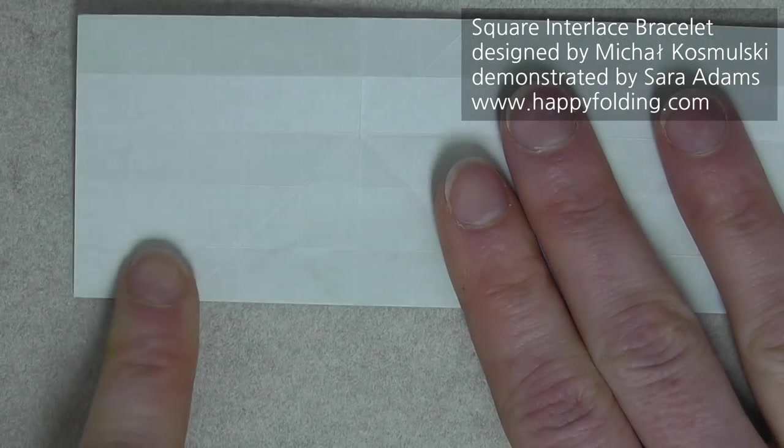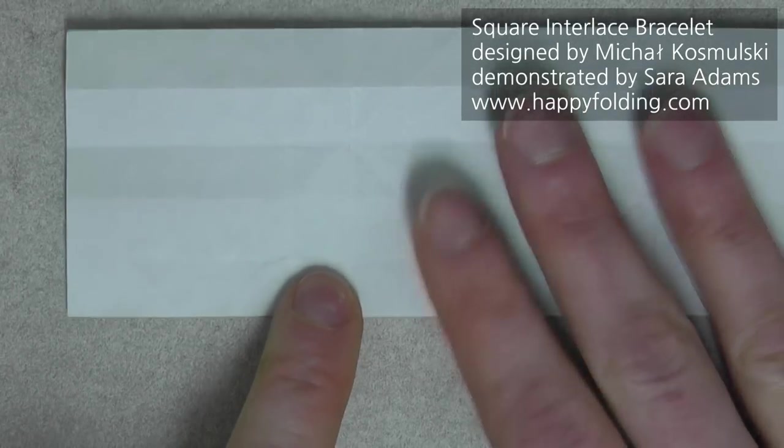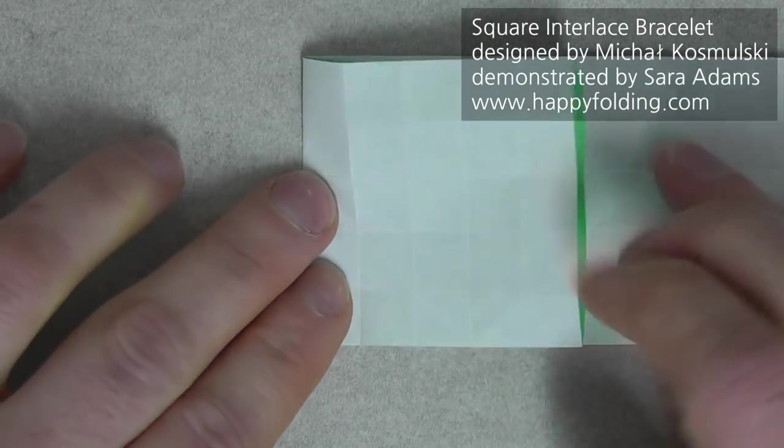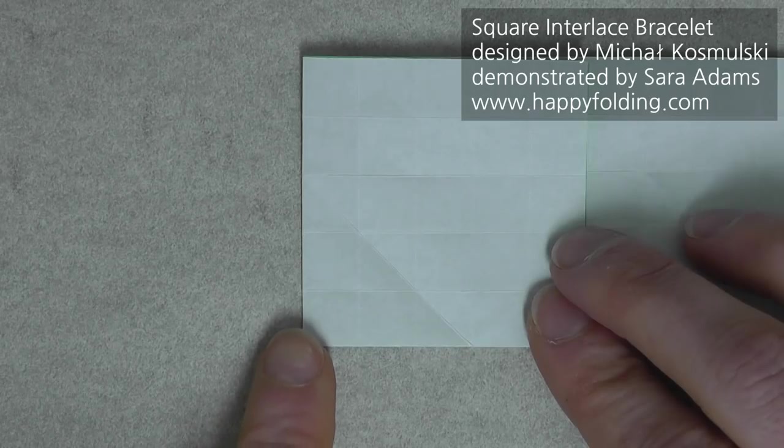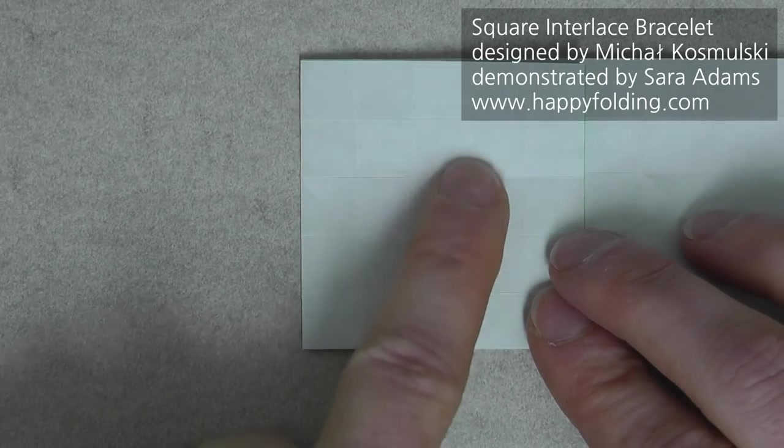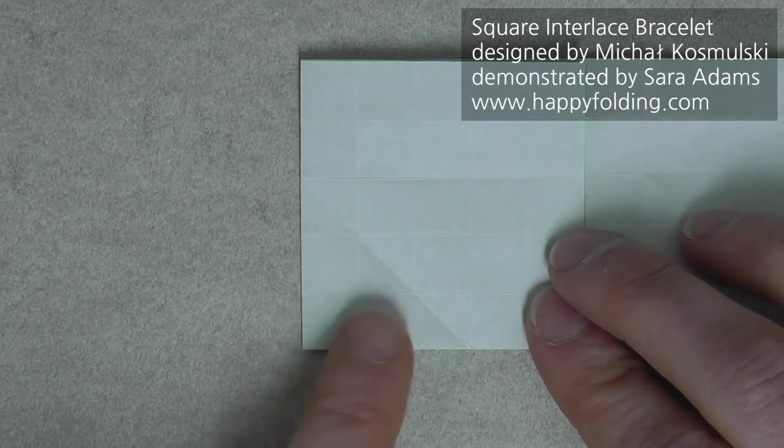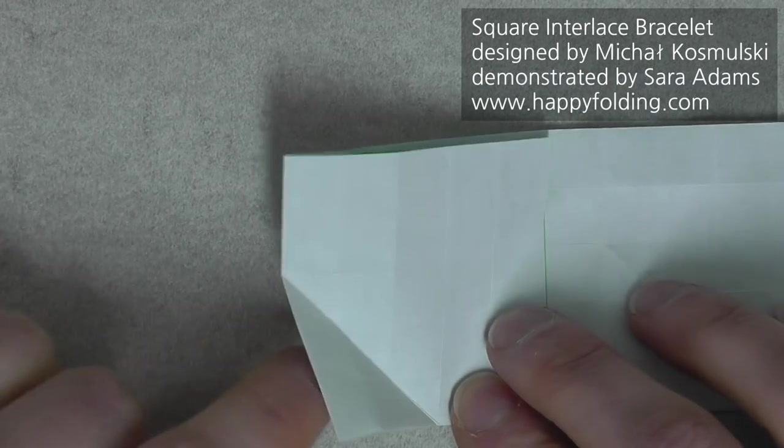Then we're going to count one, two, three, four, five in, and then crease along there. And then we're going to fold the diagonal of a square that has a side length of three grid squares, like this.